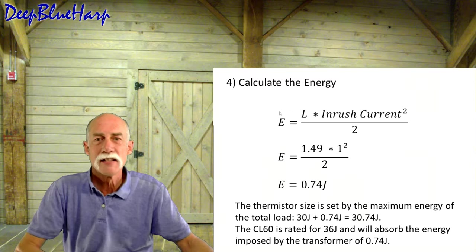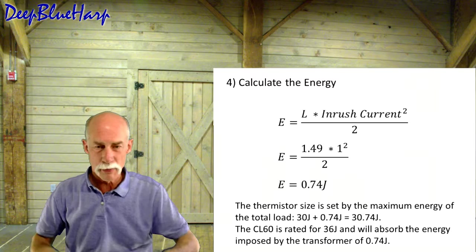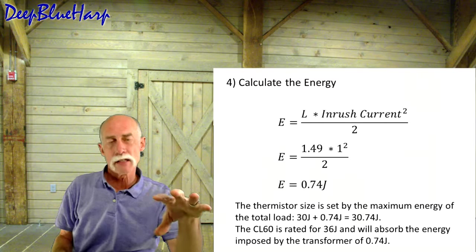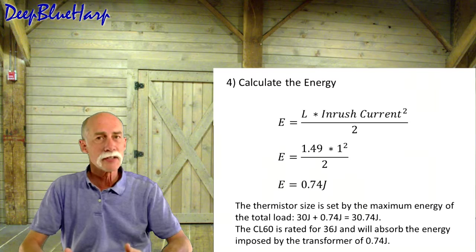Fourth and last. Calculate the energy. It's the Henrys times inrush current squared over 2, or 0.74 joules. If it were the other way, it would be 3 times that. But if we add the 30 joules from the capacitive calculation and the 0.74 joules for the transformer calculation, when we add that together, we get 30.74 joules. The CL60 is rated for 36 joules. We're good.